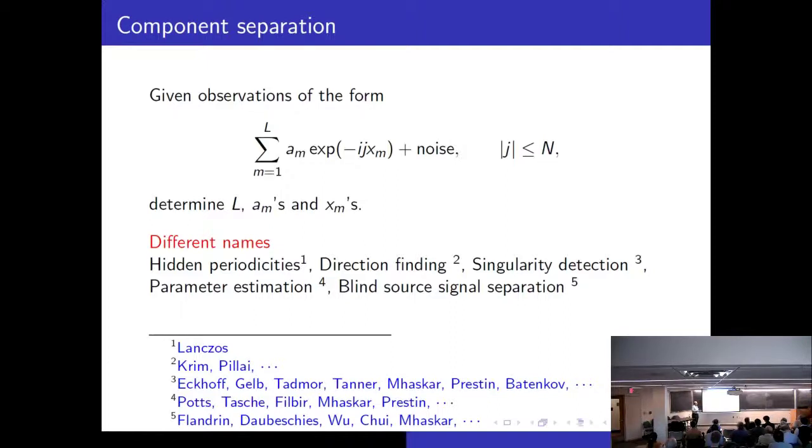Super-resolution is related to what I'm going to call component separation problem. It looks like this: we have such a sum for different points x_m, and then we have this kind of information for a certain number of finitely many j's. And then we are supposed to determine the number of components here, and where the support is, and what the weights are.